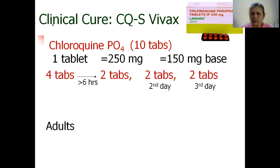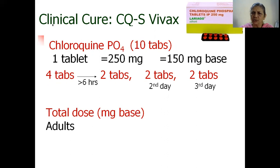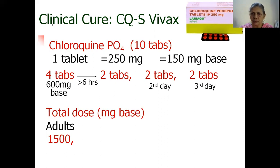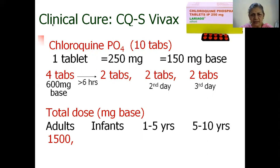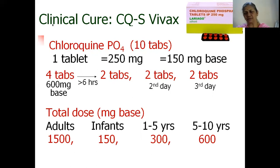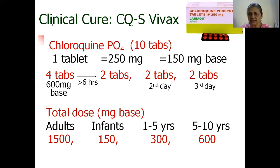In terms of milligrams of base, the total adult dose is 1500 mg of chloroquine base. The dose in children differs by age: for infants it is 150 mg base total; for children aged one to five years it is 300 mg base; and for five to ten years it is 600 mg base as the total dose. This applies to chloroquine sensitive vivax. For chloroquine resistant vivax as well as any falciparum, it is the ACT regimen, which will be discussed in the next part.